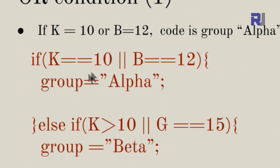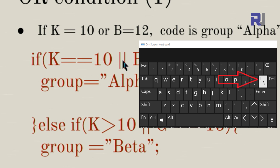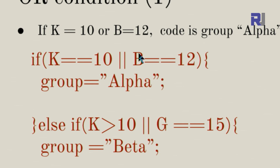In the code, if K == 10 — pay attention, we use two equal signs for comparison; one equal sign would mean assignment, which would always be true. So K == 10, then these two vertical pipe characters (||) mean OR — on a North American keyboard, it's just above the Enter key. OR B == 12: if either is true, or both are true, the whole statement is true and we assign 'alpha' to the variable group.